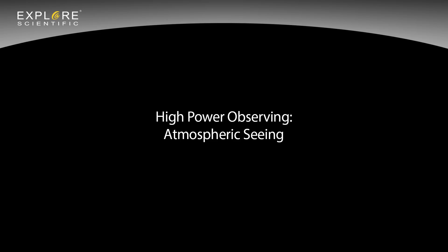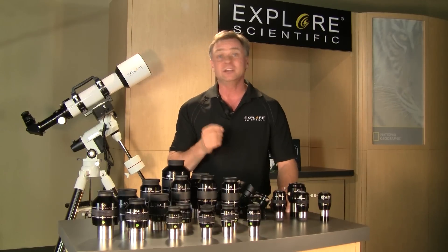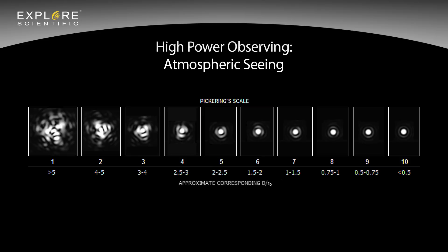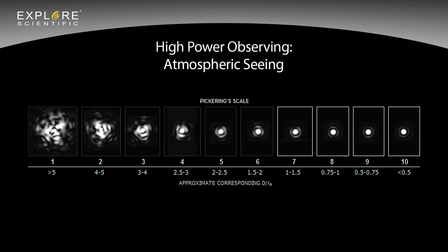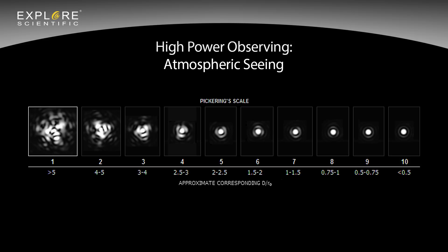Atmospheric seeing and the Pickering scale: the atmosphere can range from very turbulent — called bad seeing — to perfectly calm — called perfect seeing. Turbulence causes stars to scintillate or twinkle. Bad seeing (1–4 on the Pickering scale) distorts images of stars, planets, and the moon, looking much worse with larger aperture and higher magnification. Good to perfect seeing (7–10 on the Pickering scale) allows telescopes to be used at higher magnifications, revealing fine details. The scale runs from 1 (worst, 5 arc seconds or more star blur) to 10 (perfect, 0.5 arc seconds or less). Average nights range from 5 to 7.